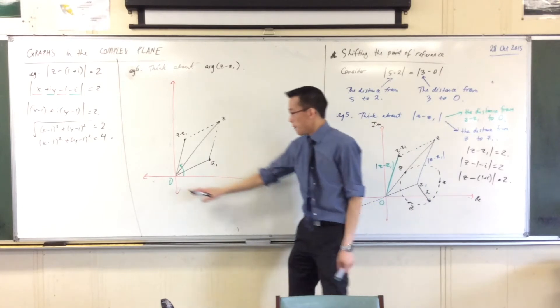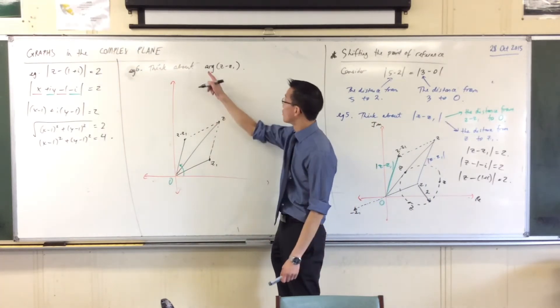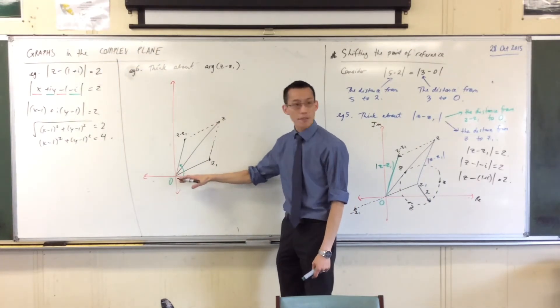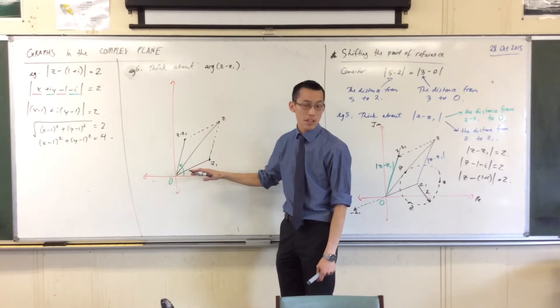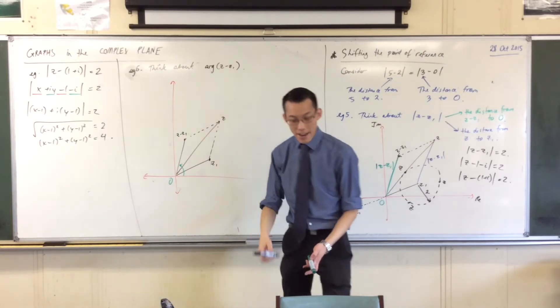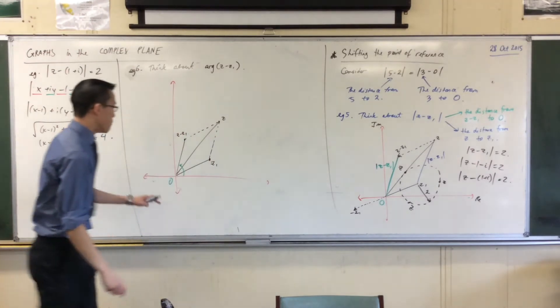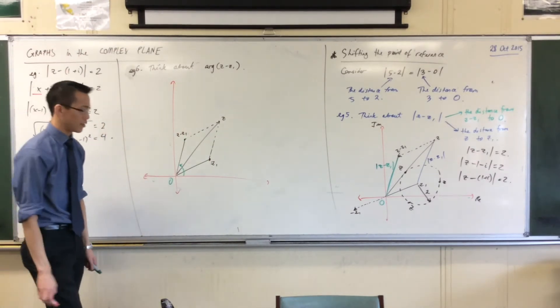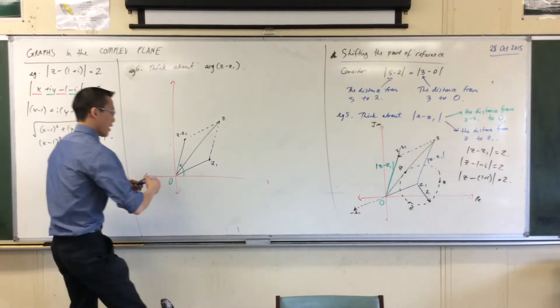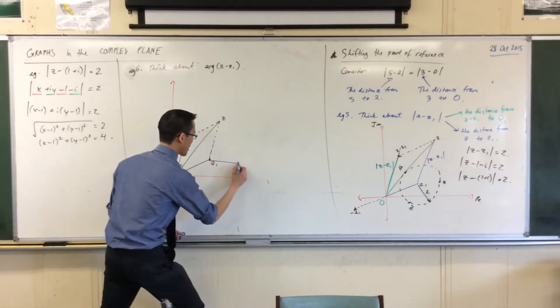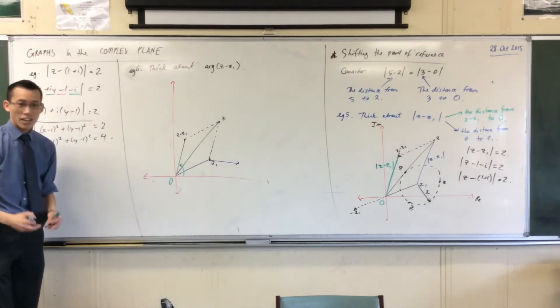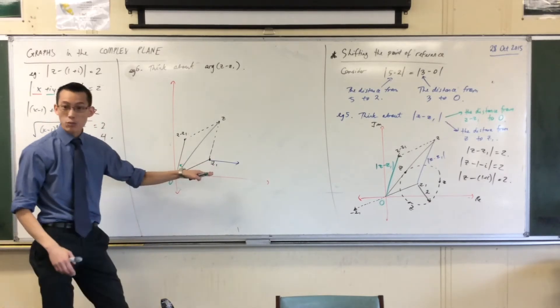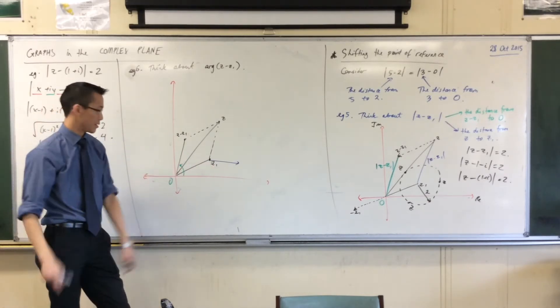Now remember, this green angle, arg of z minus z1, is measured from a horizontal. It's measured from the positive real axis. So I kind of need another positive real axis, but I'm shifting my point of reference. Shifting my point of reference. So therefore, if I put in a positive real axis that comes, as it were, off of z1, that's where my new measurement point is.